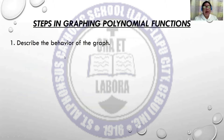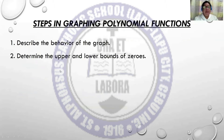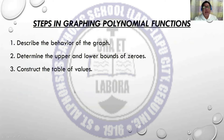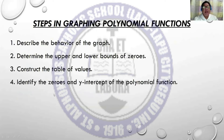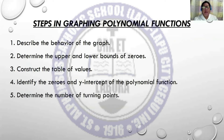First, you have to describe the behavior of the graph. Determine the upper and the lower bound of zeros. Construct the table of values. Identify the zeros and y-intercept of the polynomial function. Determine the number of turning points. And you have to sketch the graph.